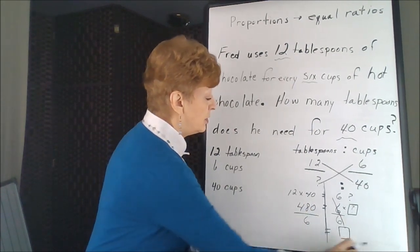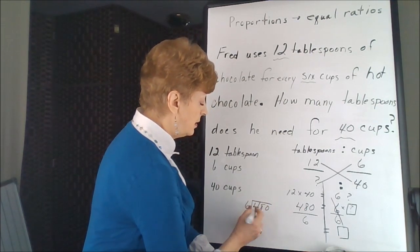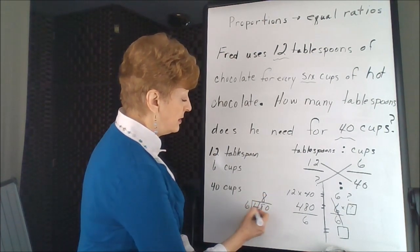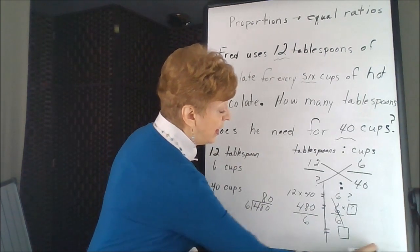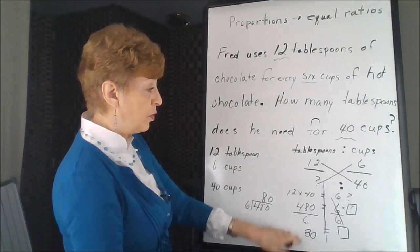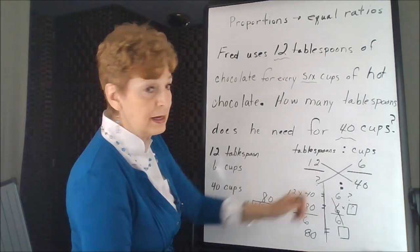So we'll do our 480 divide by 6. 6 goes into 48, 8 times. And 6 goes into 0, 0 times. So our box is 80. If we had 80 tablespoons, we could make 40 cups.